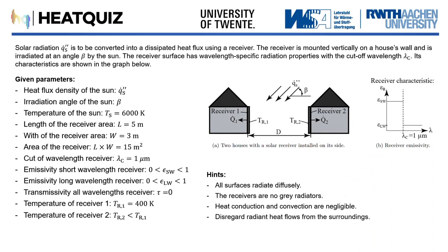Some properties about the heat flux, irradiation angle, temperatures, and geometric characteristics are given. It is noteworthy that the receivers do not transmit any radiation. Besides that, all surfaces radiate diffusely, the receivers are not grey radiators, heat conduction and convection are negligible, and we can disregard radiant heat flows from the surroundings.